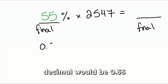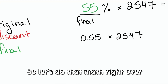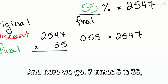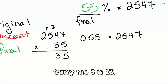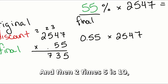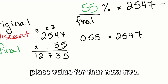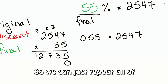Turning a percentage to a decimal: 0.55 multiplied by 2547. So: 2547 multiplied by 0.55. Seven times five is 35, carry the three. Four times five is 20, plus three is 23. Five times five is 25, plus two is 27. Two times five is 10, plus two is 12. Then we move over one place value for the next five, and since we're multiplying by the same digit, we repeat those same partial products.